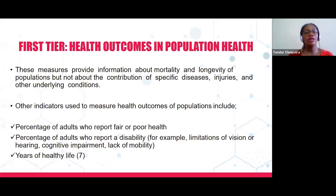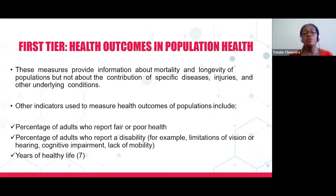The measures described above provide information about mortality and longevity, but not about the contribution of specific diseases, injuries, and other underlying conditions. Other indicators used to measure health outcomes include the percentage of adults who report fair or poor health, percentage of adults who report a disability such as limitations of vision or hearing, and years of healthy life lived. These indicators can tell about morbidity occurring in populations.